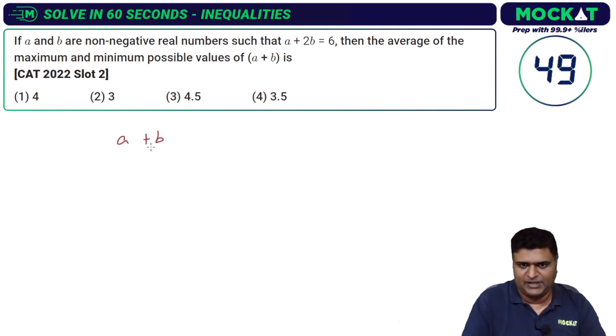For a plus b, what is the max going to be? The max I can assign is 6, not more than that. If b is 0, then a becomes 6. If a is 0, then 2b is 6, so b becomes 3.